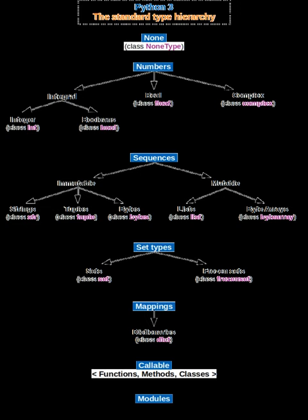A data type also represents a constraint placed upon the interpretation of data in a type system, describing representation, interpretation and structure of values or objects stored in computer memory. The type system uses data type information to check correctness of computer programs that access or manipulate the data.